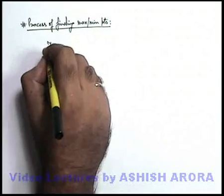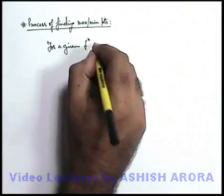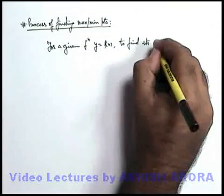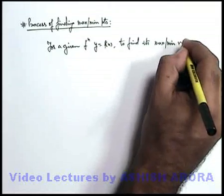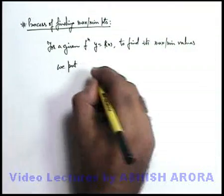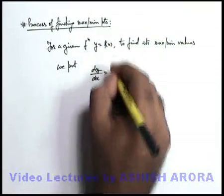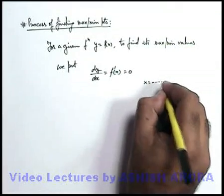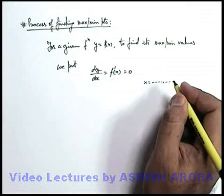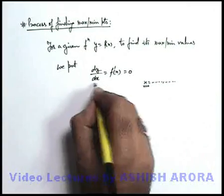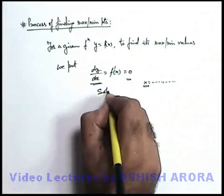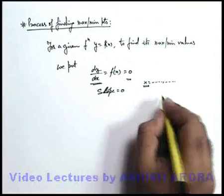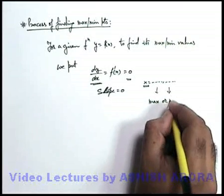Let's discuss the process of finding the points of maxima or minima. As we have studied, maxima and minima are the points where the slope of the function will become zero. For a given function y = f(x), to find its maximum or minimum values, we put dy/dx — or f'(x) — equal to zero. On solving this expression we get some values of x, which are the points of maxima or minima.